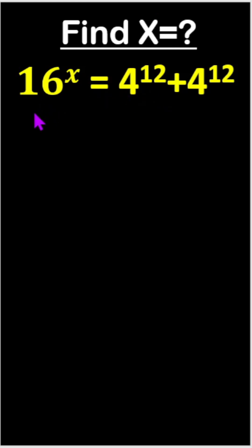Find x. Here is 16 to the power x equals 4 to the power 12 plus 4 to the power 12. So this is 16 to the power x and 4 to the power 12 plus 4 to the power 12, we can write 2 times 4 to the power 12.